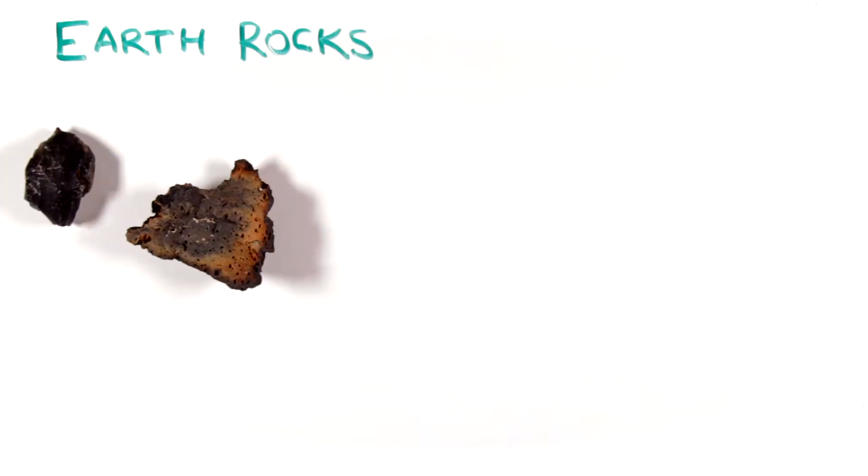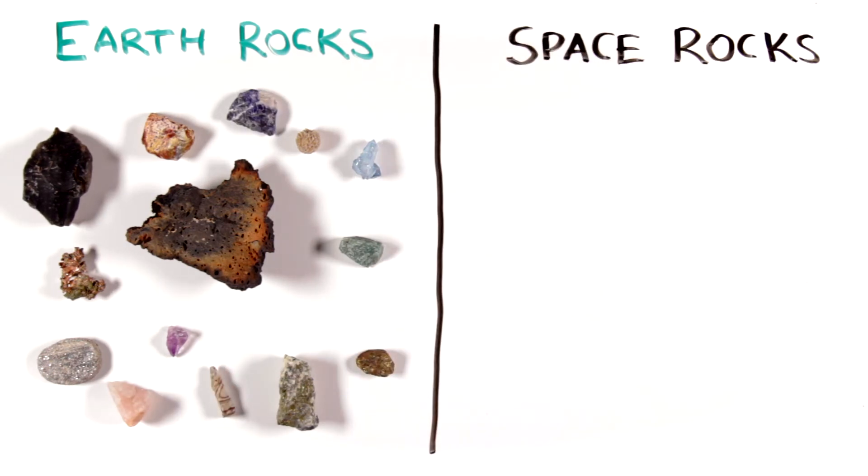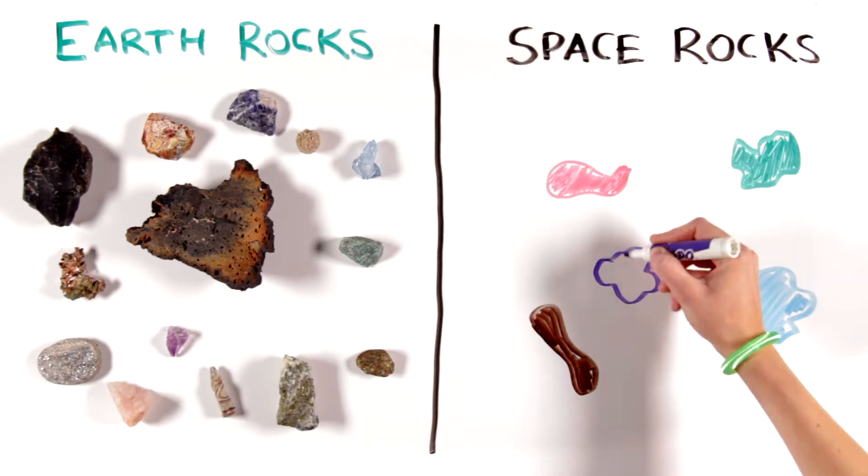Rocks on Earth can come in all sorts of shapes, sizes, and colors. But what about rocks in space? Are asteroids colorful like some Earth rocks?